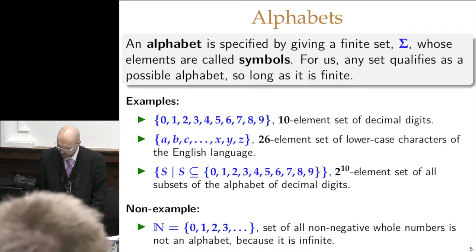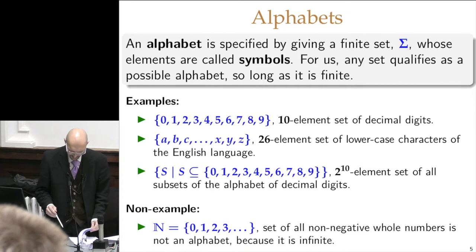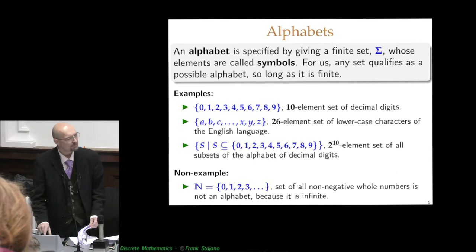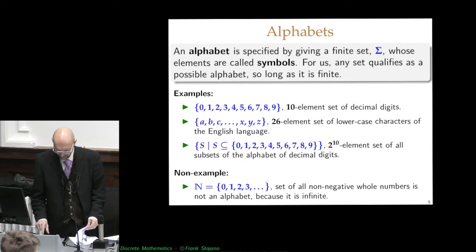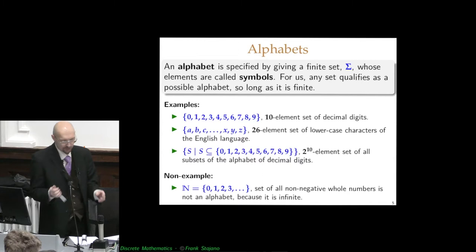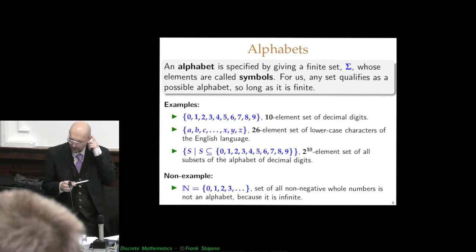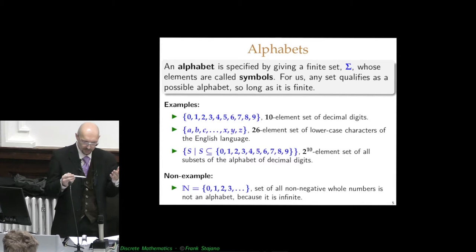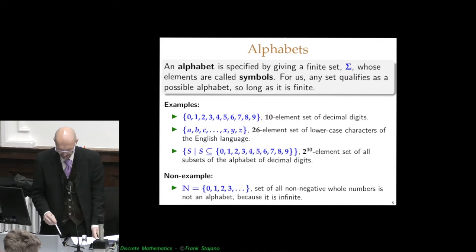So what is a formal language? To explain what a formal language is, we start from the basics. A formal language is basically a set of strings, and we are talking of strings which are sequences of symbols over some kind of set of symbols which we call an alphabet. An alphabet is a finite set, sigma, whose elements are called symbols.